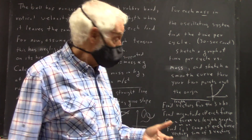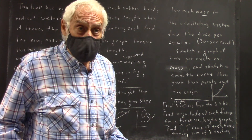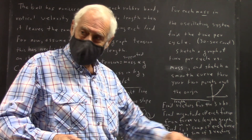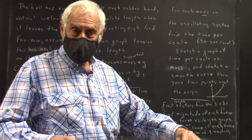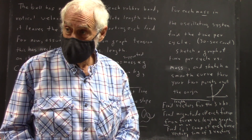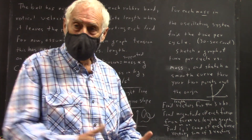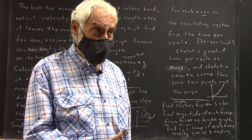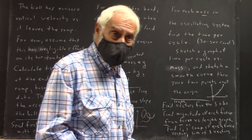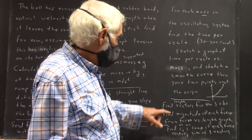For the oscillating system — the one where we counted the cycles — for each mass in the oscillating system, find the time per cycle. You know how many cycles there were in 30 seconds; it was a 30-second count. Graph time per cycle versus mass.